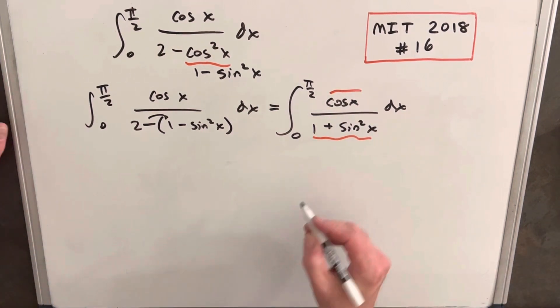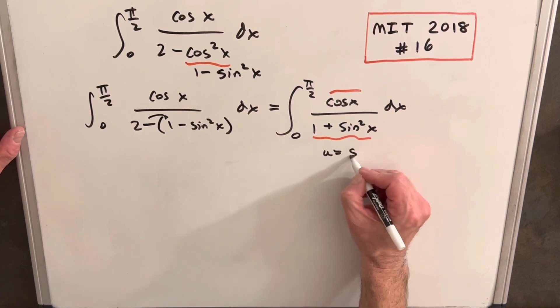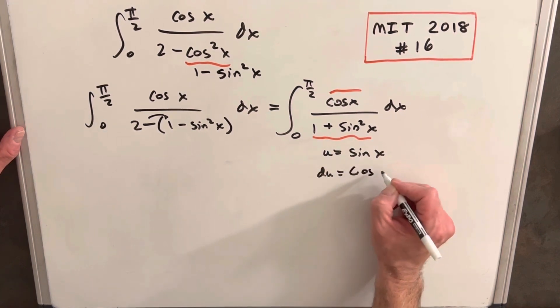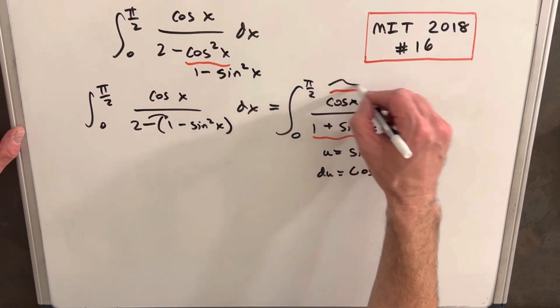So what I want to do is make u equal to sine x, because that way our du is going to be cosine x dx, and that's exactly what we have right here.